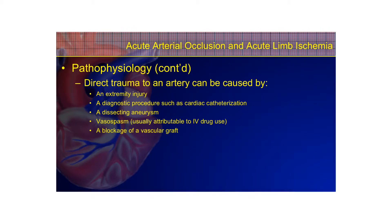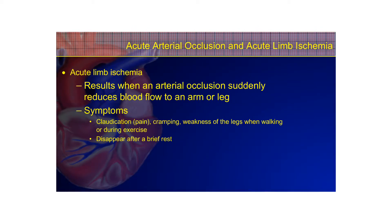Other causes of arterial obstruction include direct trauma to an artery from an extremity injury, a diagnostic procedure such as cardiac catheterization, a dissecting aneurysm, vasospasm usually attributed to IV drug abuse, or blockage of a vascular graft — all of these can cause obstruction of blood flow.